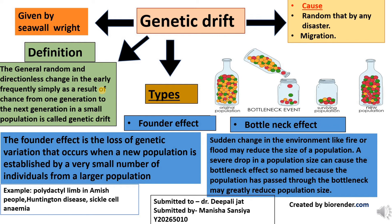An example of the bottleneck effect is the northern elephant seal, which has reduced genetic variation most likely due to being hunted. Hunting reduced their population size to as few as 20 individuals at the end of the 19th century. Since then their population has rebounded to over 30,000, but the genes still carry the mark of their bottleneck — they have much less variation than a population of the southern elephant seal that has not been hunted.